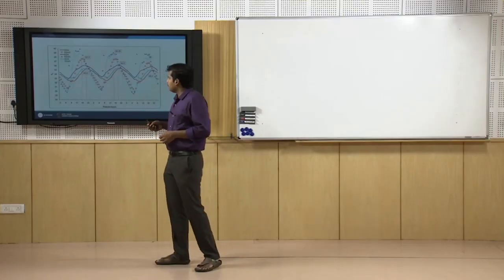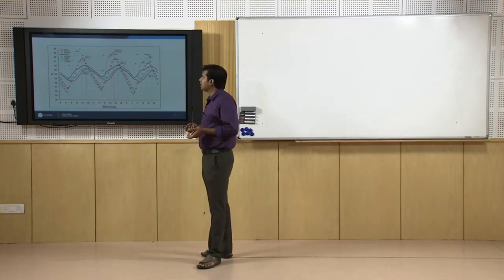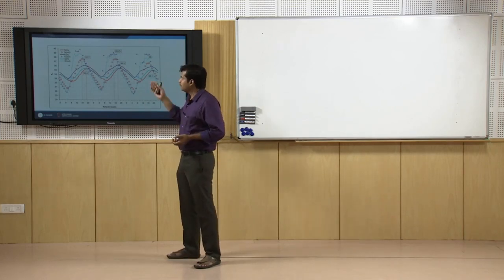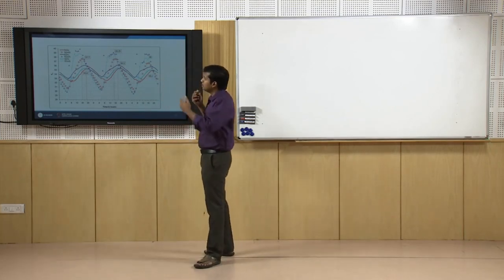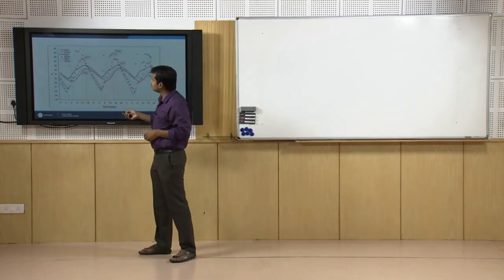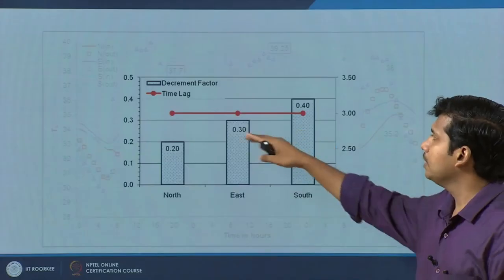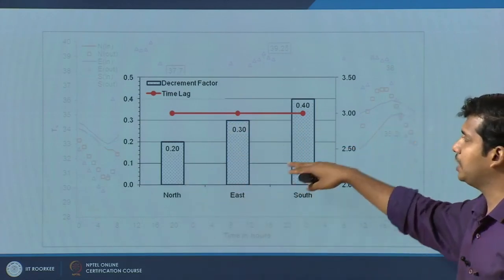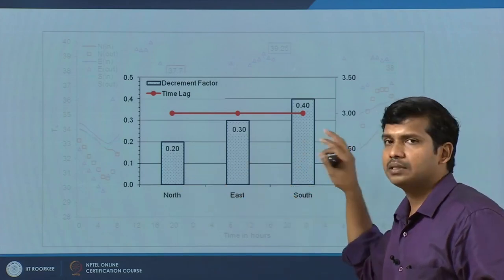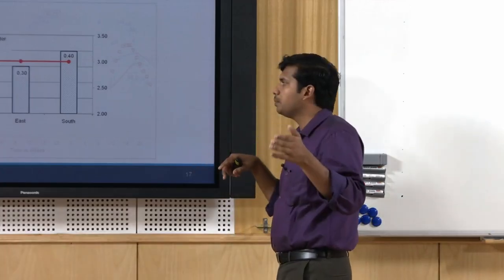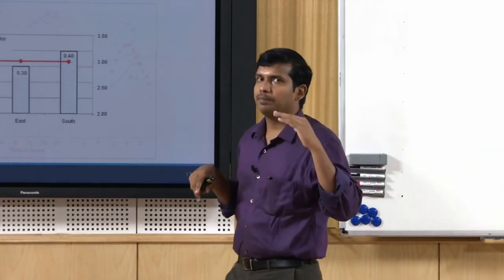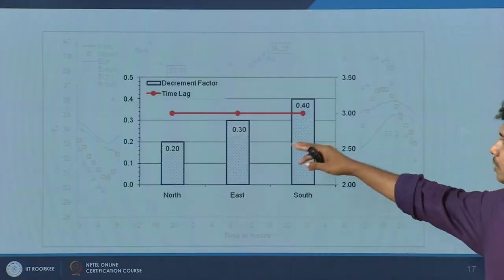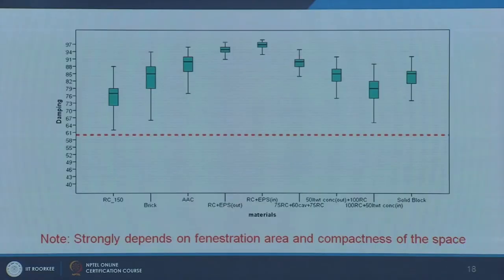To continue with some examples: thermal damping and time lag also vary with respect to orientation of the particular room or space. For a north versus east versus south exposed wall surface, the time lag may remain the same but there can be differences. The decrement factor considerably varies because it is based on surface temperature values. The ambient outside surface solar temperature peaks at a particular time and varies from one orientation to another.